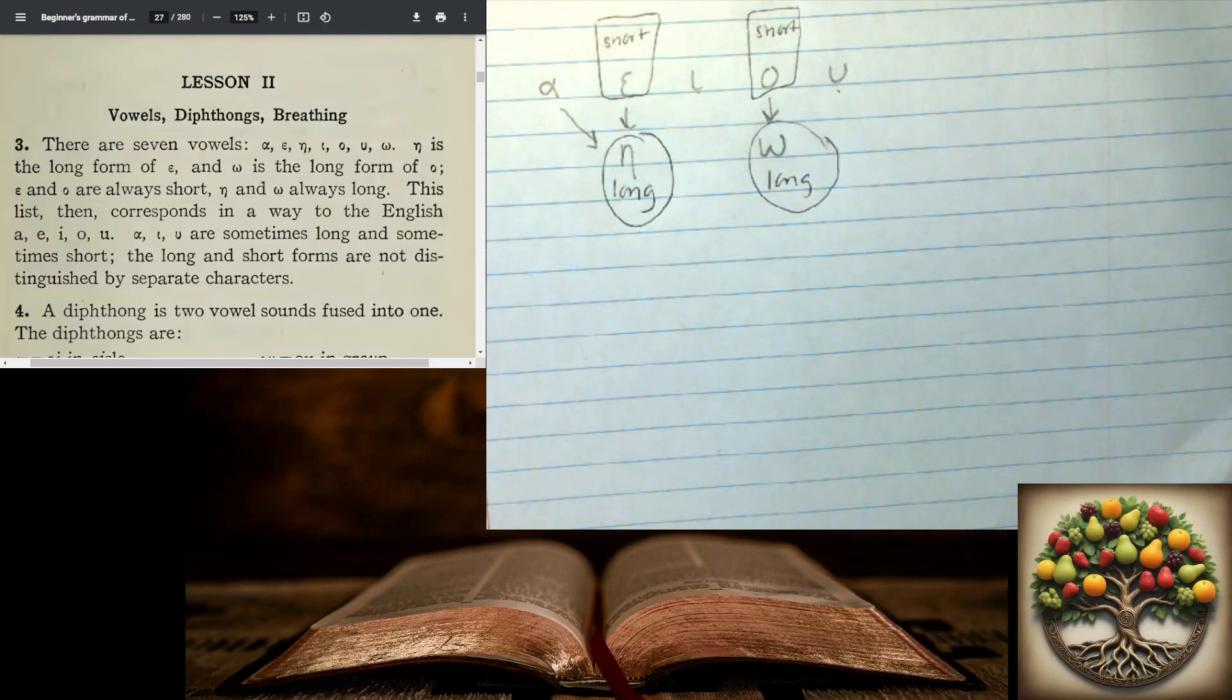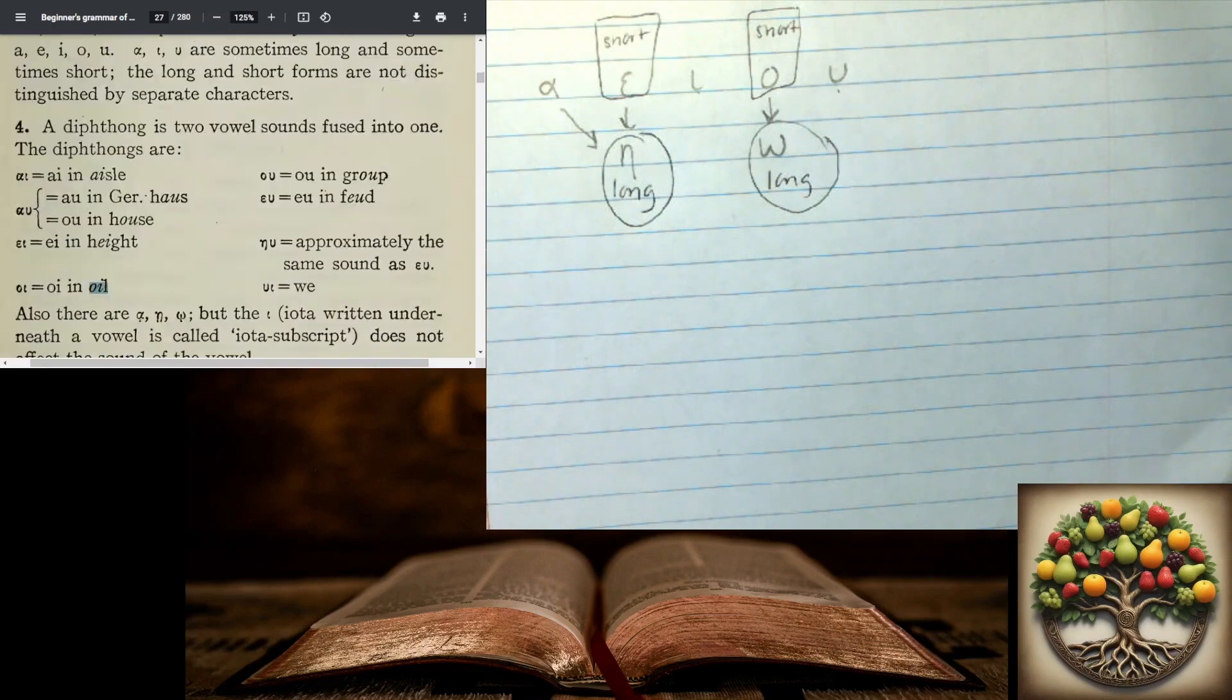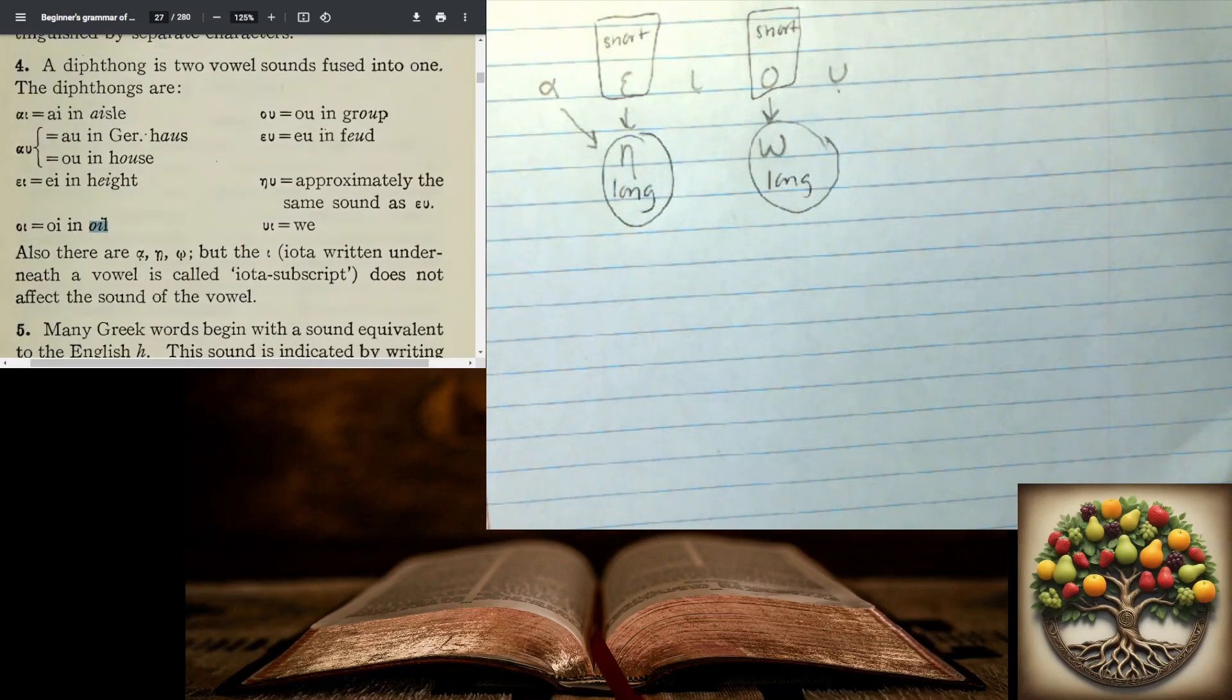Now we're going to talk about diphthongs, which is essentially when two of these vowels are put together. And the most obvious example I can give you in the English is the word oil. So the o and the i, the omicron and the iota, are going to sound like oi in oil. And we have other combinations here.